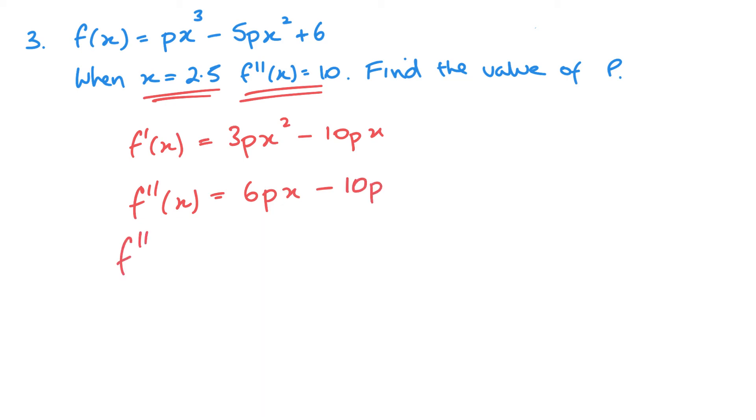Substitute 2.5 in, we get 6p times 2.5 minus 10p, and that's going to equal 10. 6 times 2.5 is 15, so we've got 15p minus 10p equals 10, 5p equals 10, p equals 2.